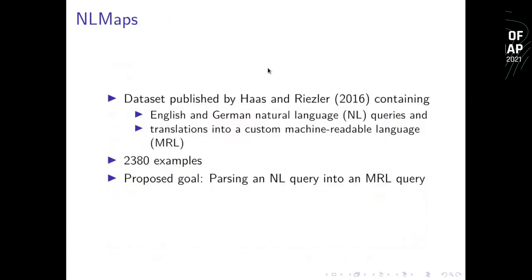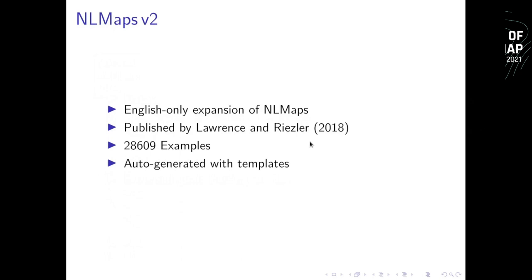This was already an idea by Caroline Lawrence, then called Haas, and Stefan Rietzler. They published NLMaps, a dataset containing English and German natural language queries and their translation into a custom machine readable language called MRL. The proposed goal of this dataset is to parse a natural language query into an MRL query. They later expanded the dataset with auto-generated templates to almost 30,000 examples.